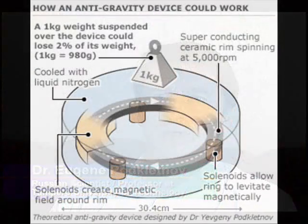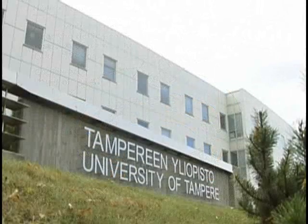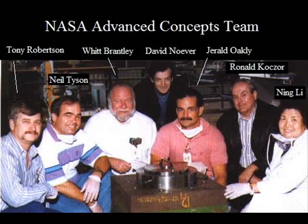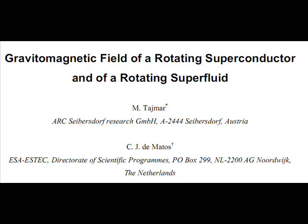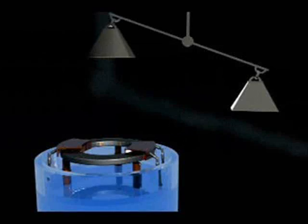In 1992, Dr. Eugene Podkletnov discovered an anomalous gravitational effect while working at a superconductor research laboratory at the University of Tampere in Finland. This effect has since been replicated by NASA and ESA, the European Space Agency. But despite all this, the effect has been almost completely ignored by mainstream science.